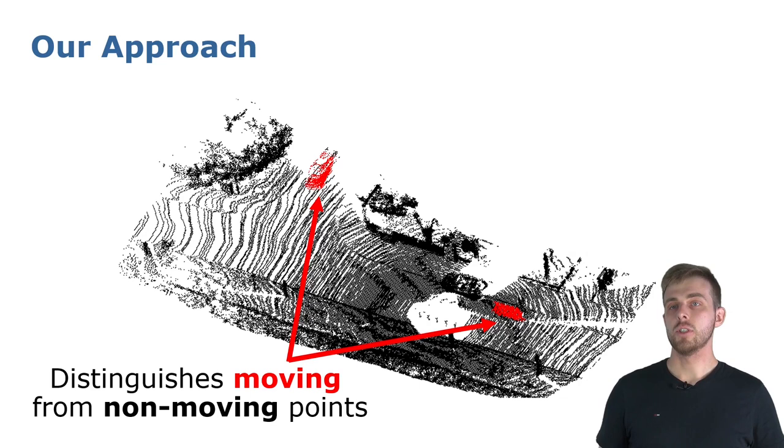Our approach takes this registered 4D point cloud and predicts moving objects in the sequence. In this example, we correctly classify the cyclist behind us and the slowly moving car at the top to be moving, whereas the vehicle next to us is not.